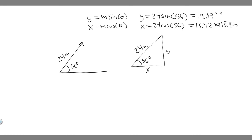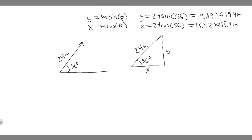And then this one is about 19.9. So these are going to be your x and y components — 19.9 is the y component and 13.4 is the x component. So just memorize these formulas: take your magnitude times the cosine of the direction for x, and magnitude times the sine of the direction for y.